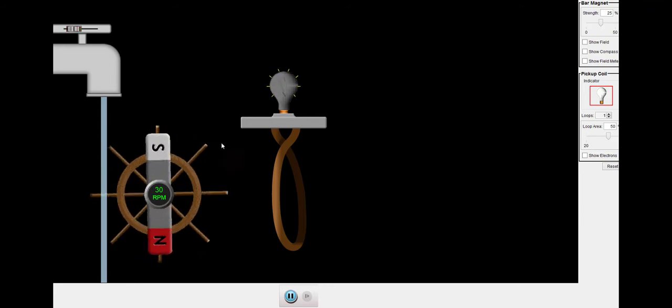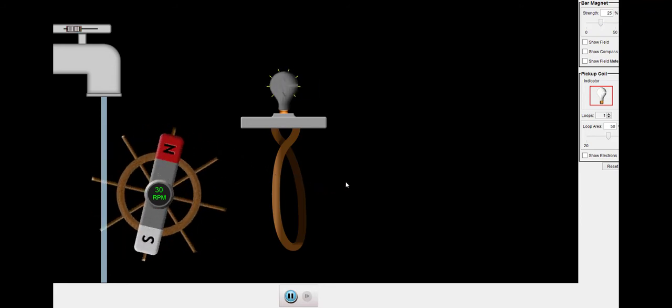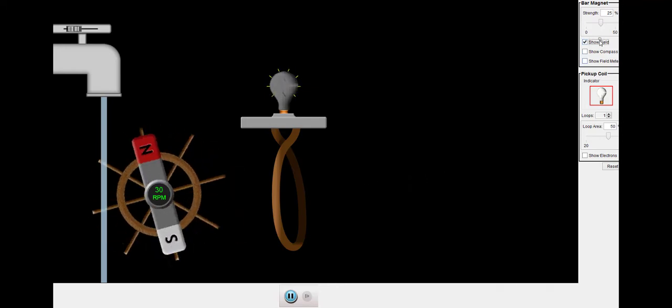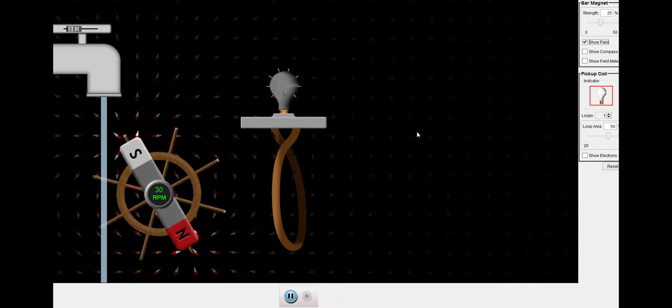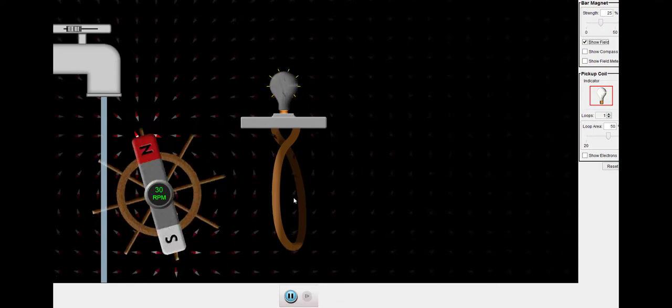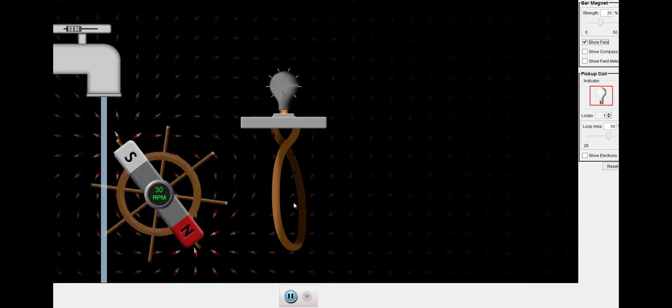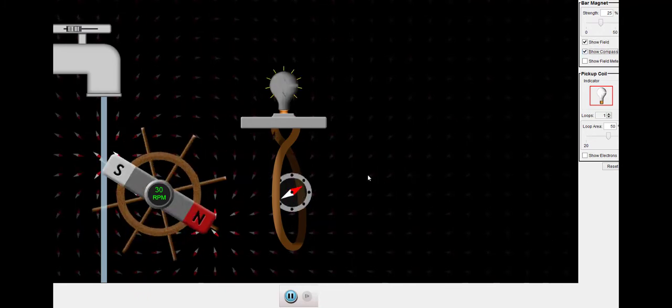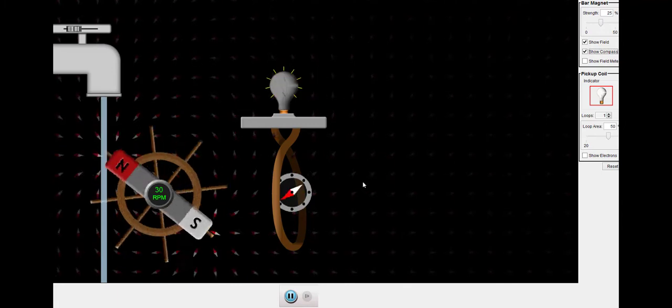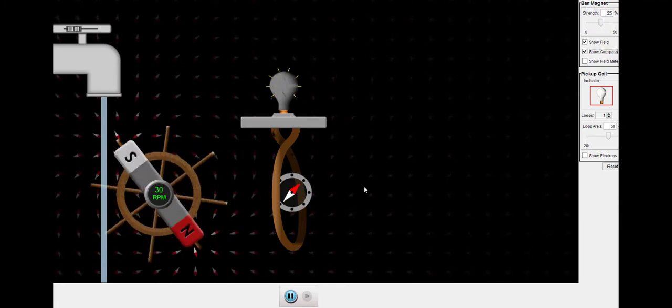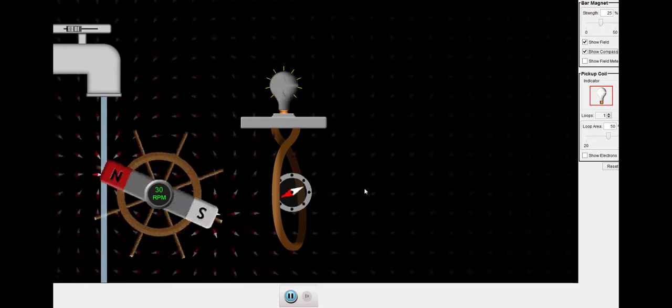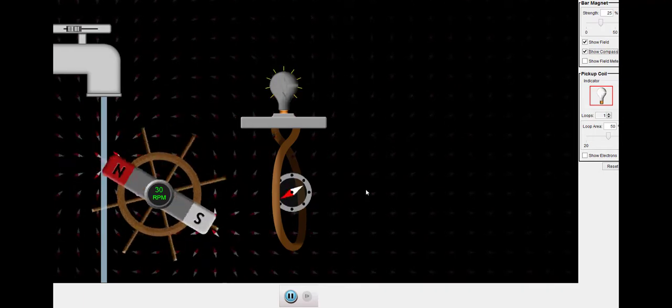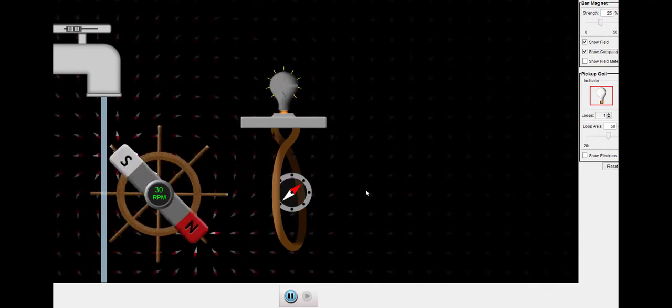Turning the tap on, you can see that the bulb glows on and off. What's going on here? The magnet of course gives rise to a magnetic field around it. As the magnet rotates, the magnetic field lines inside the loop rotate as well. You can see this more clearly with this compass inside the loop. What this means is that the magnetic flux through the loop is changing continuously with time. From Faraday's law of induction, we know that the changing magnetic flux gives rise to an induced EMF, causing an induced current to flow in the circuit, which lights up the bulb.